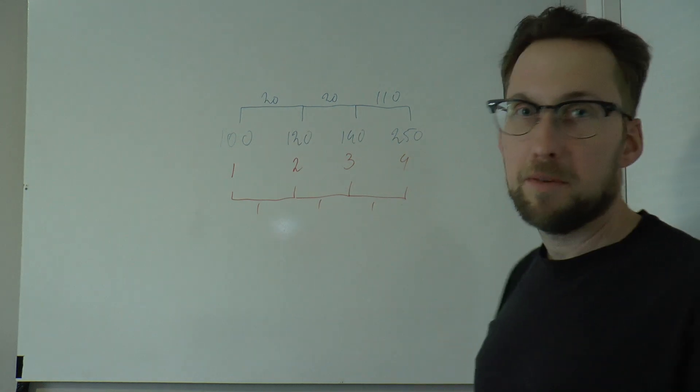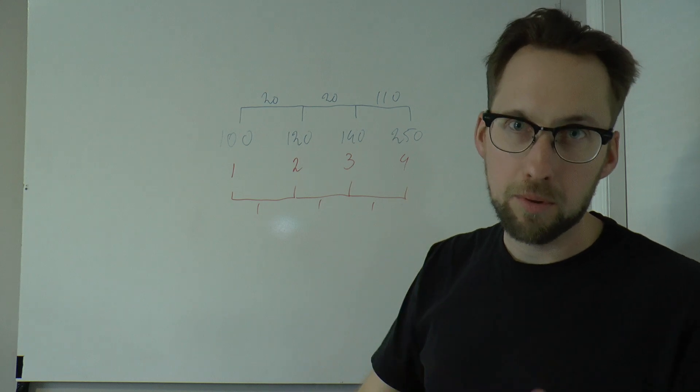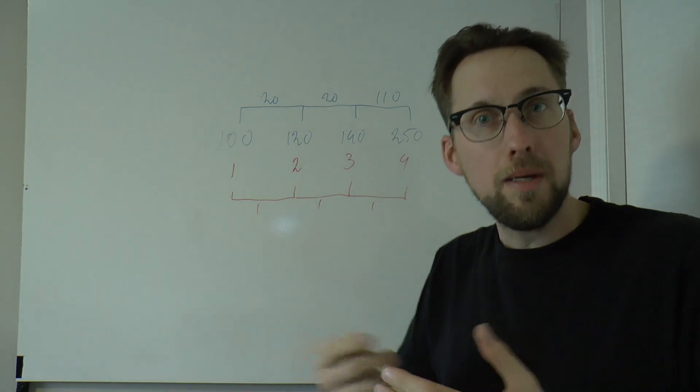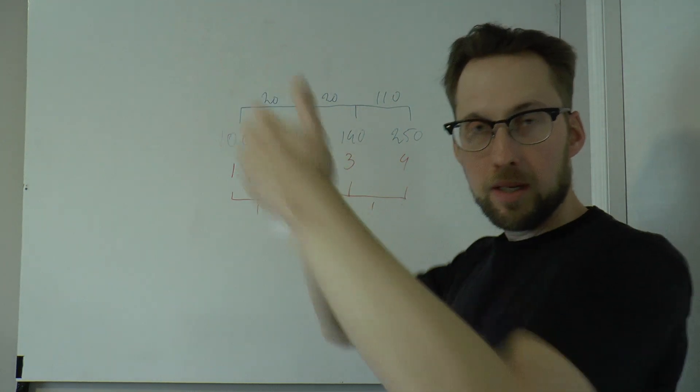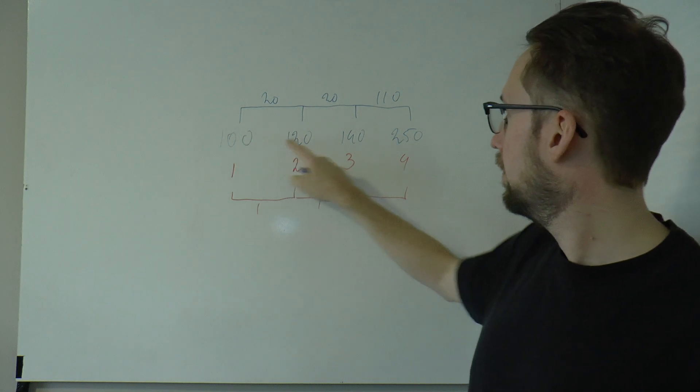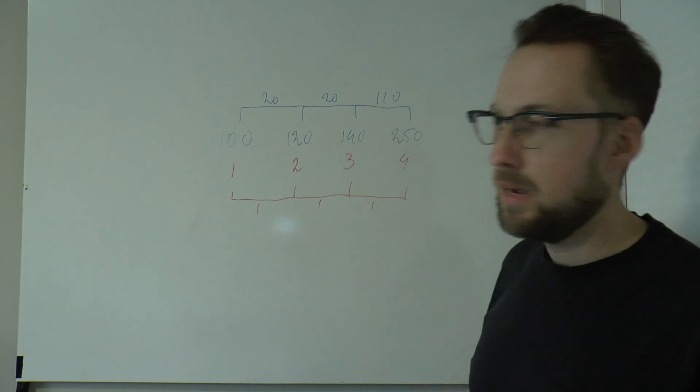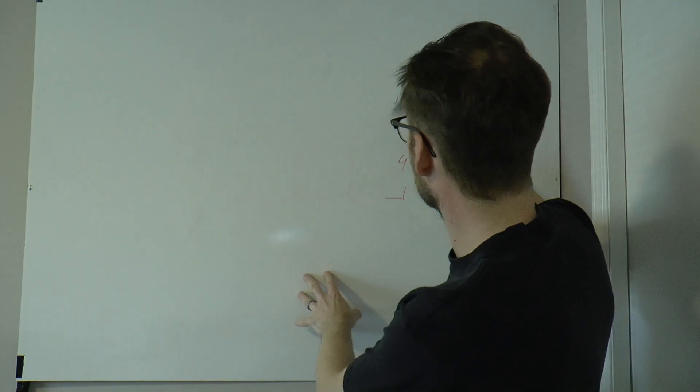Now, this would not be a problem if I had measured 100 pounds, 101, 102, 103, 104, all the way down to 250, because then there would be equal unit size. After all, with every measurement, an observation goes up one unit. But here, that is not the case. I hope that makes sense to you. If not, you have to ask me.